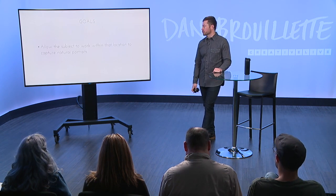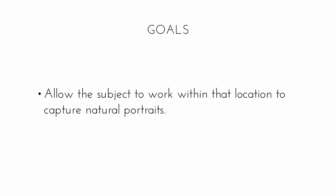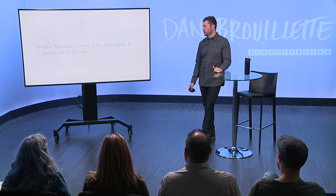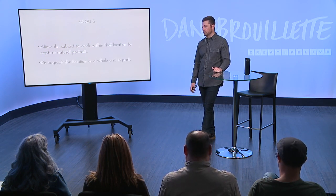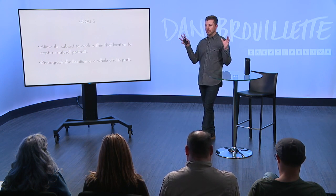Allowing the subject to work within that location to capture natural portraits — that's what you're going to see happen in the videos, and that's what I do on all these shoots no matter whom it's with. Photograph the location as a whole and in part. I like to work from wide and then slowly work my way in. I used my 24-70 and got wide shots of Brock with his basketball, with the windows and all that. Then slowly I worked my way in to three-quarter-length portraits, and then I switched to the 70-200 to get close-ups.